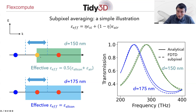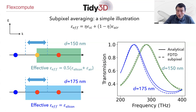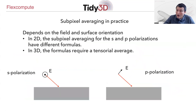This derivation truly and strongly relies on the fact that the Ex field is continuous and parallel to the interface. So it really works well only when the dominant electric field component is parallel to the interface. As we've shown, it does work well in this case. But this derivation points to the fact that in general, subpixel averaging is quite a bit more complicated.